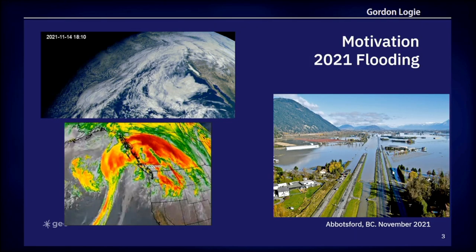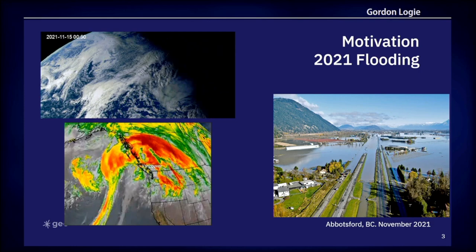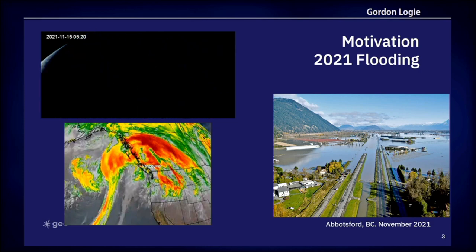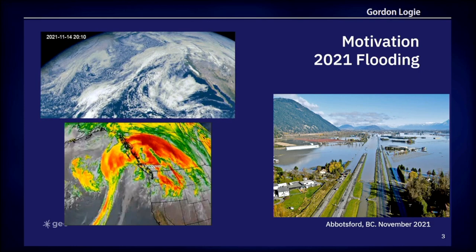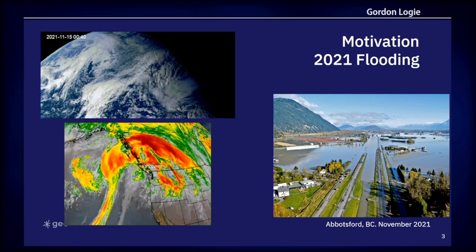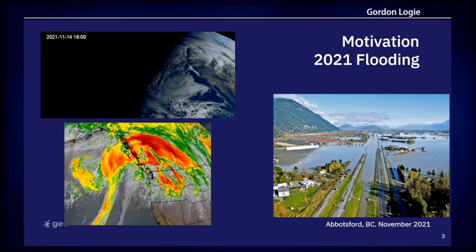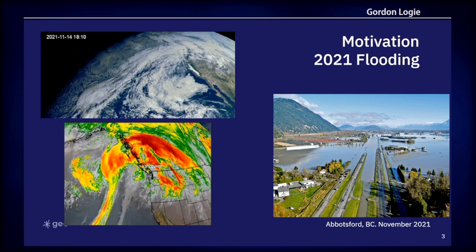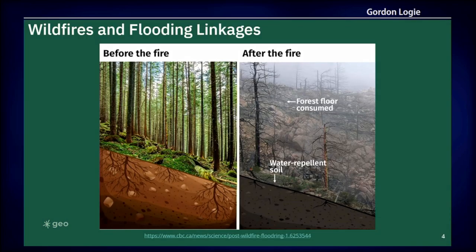Following the wildfire season, in the winter of 2021, an atmospheric river rainfall event occurred, which dumped massive amounts of rain on southern BC and caused severe flooding and major damage to transport infrastructure and billions of dollars in economic impacts. Now, on the face of it, these seem like separate disasters, but actually there are some linkages between them.